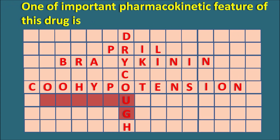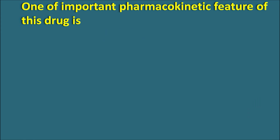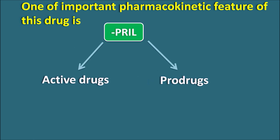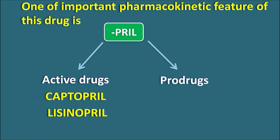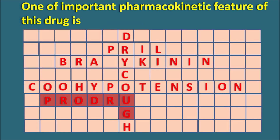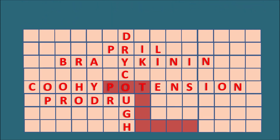For the next block, one important pharmacokinetic feature of this drug — the block ends with the letters UG. ACE inhibitors can be of two types: active drugs or prodrugs. We have two active drugs — captopril and lisinopril — while the remaining drugs are prodrugs. Since the block ends with U and G, the answer is prodrug. So this drug is an ACE inhibitor with the suffix PRIL, it produces dry cough due to bradykinin accumulation, causes hypotension, is active when having free carboxylic acid, and acts as a prodrug.